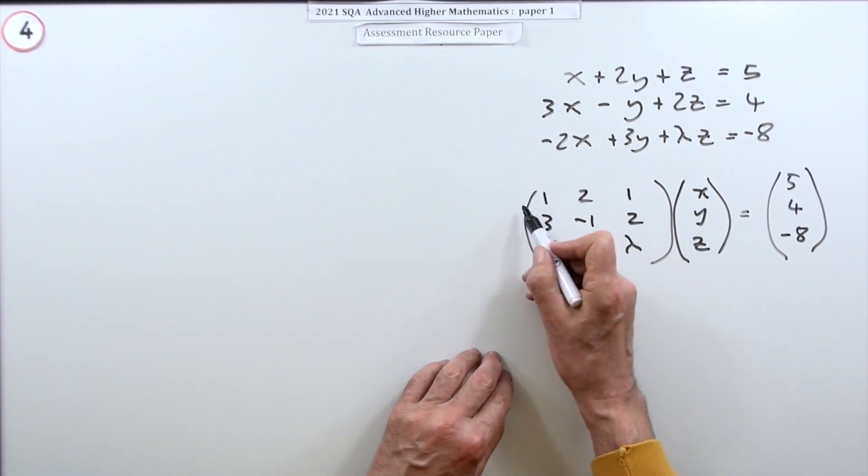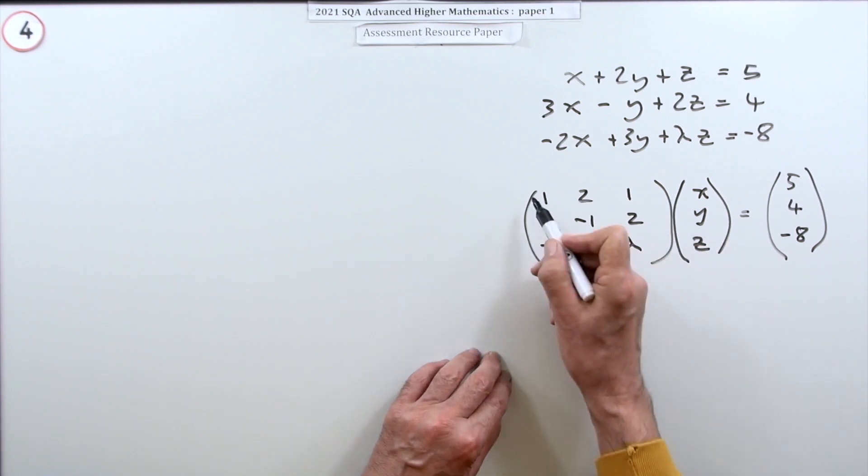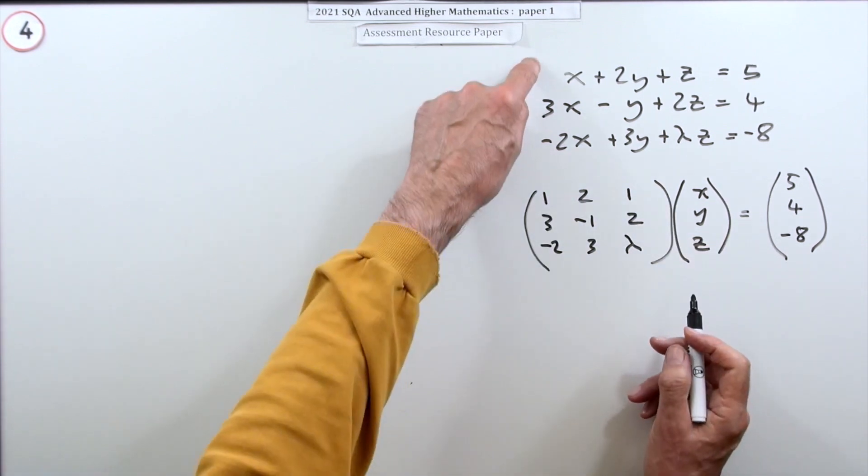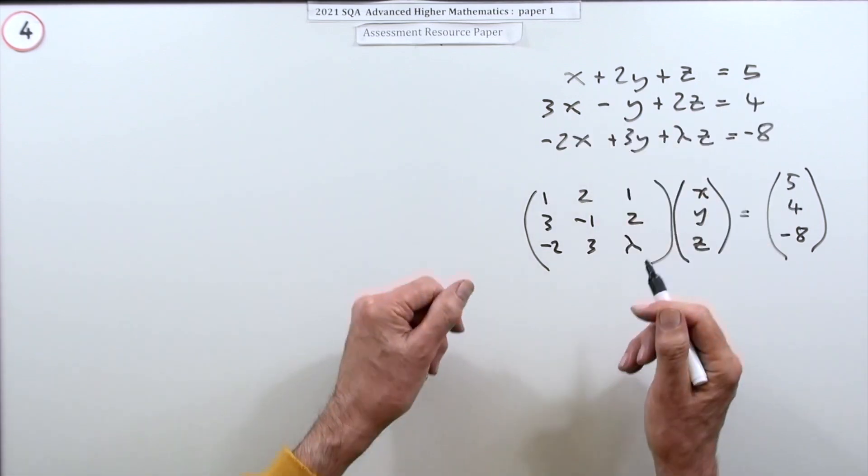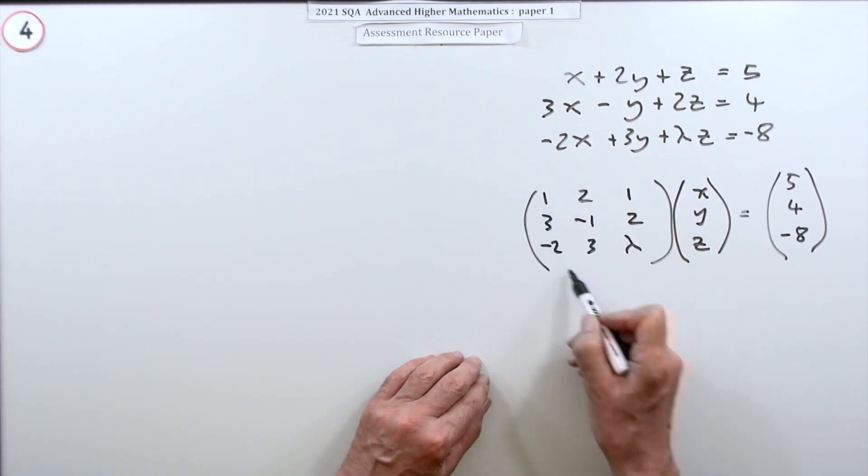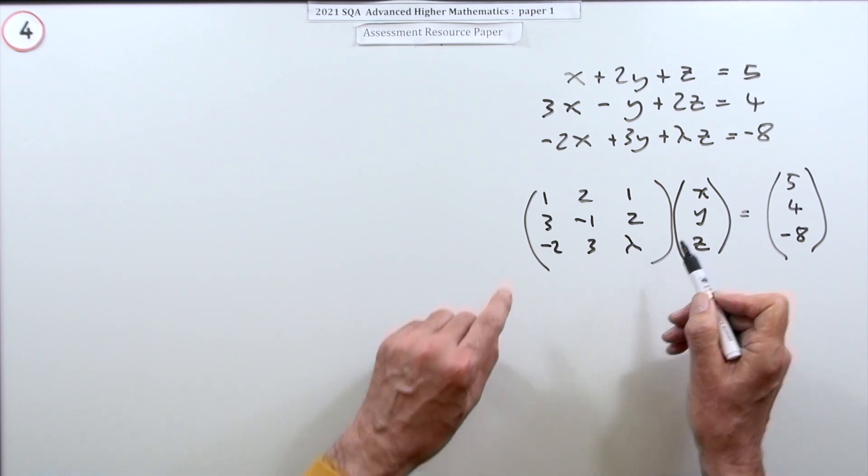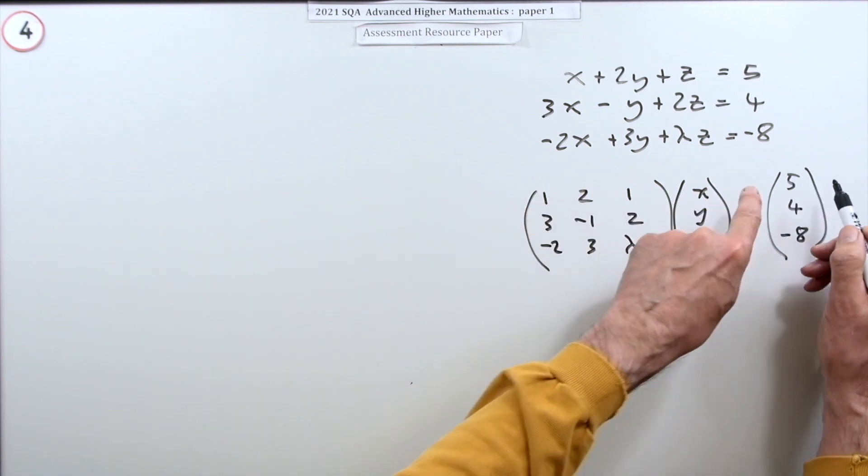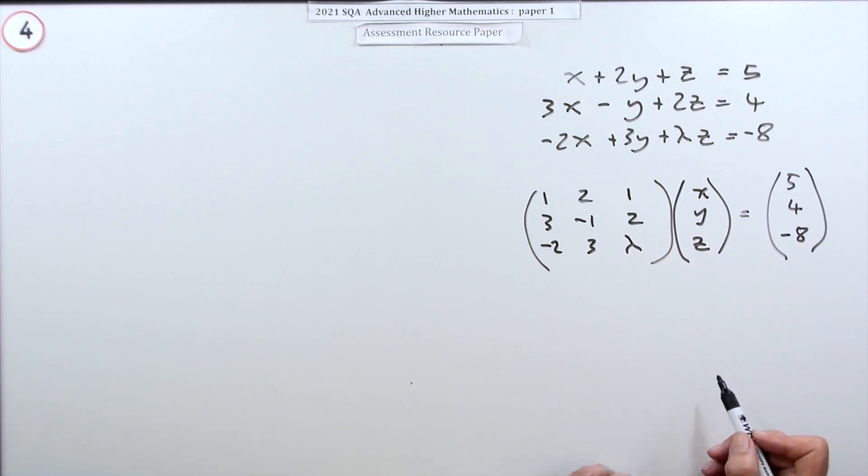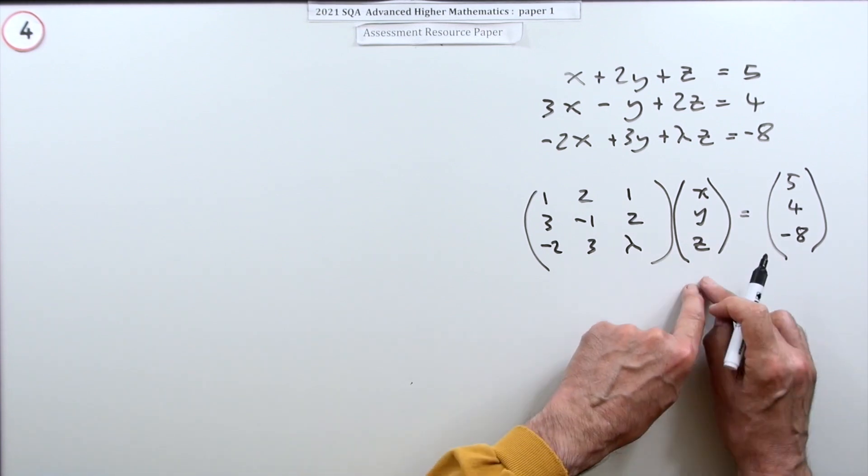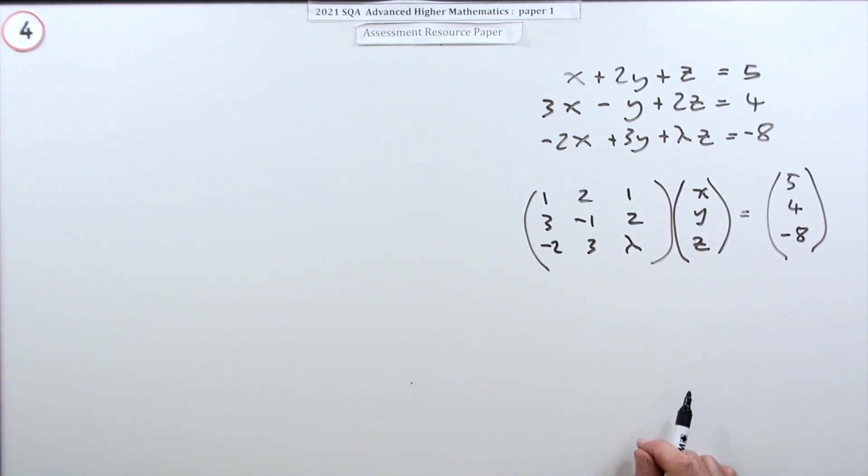Another way of doing that is just to go through elementary row operations, which is essentially just adding them together and so on to make things disappear. To turn this into the identity matrix. And at the same time, replicating those operations over here. In which case you'll end up with x, y, z equals the solution.